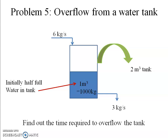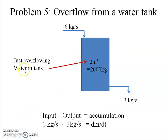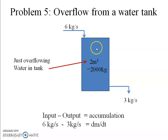We need to find the time at which the tank starts overflowing. At that moment, the tank will be completely full — 2 m³ of water, or 2000 kg. So the initial state is 1000 kg of water in the tank, and the final state, just before overflow, is 2000 kg of water in the tank.